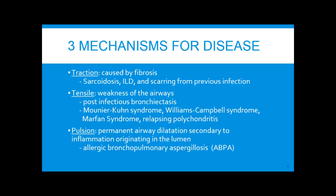Then there's tensile, or weakness of the actual airways themselves — this is post-infectious, and there are some structural abnormalities such as Mounier-Kuhn syndrome, Williams-Campbell syndrome, and Marfan's. And then pulsion, which is permanent airway dilation secondary to inflammation that originates within the lumen — a classic example of this is ABPA.